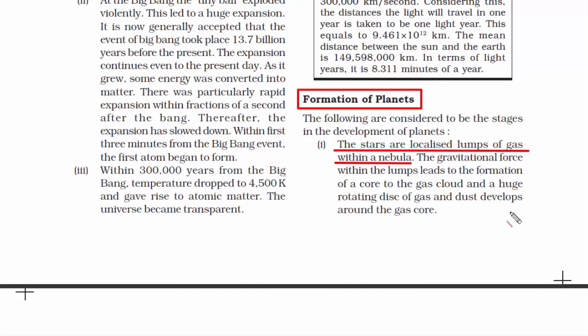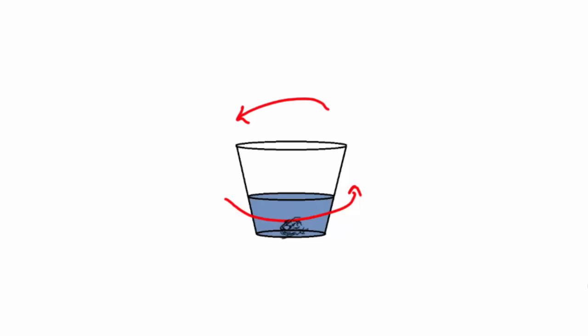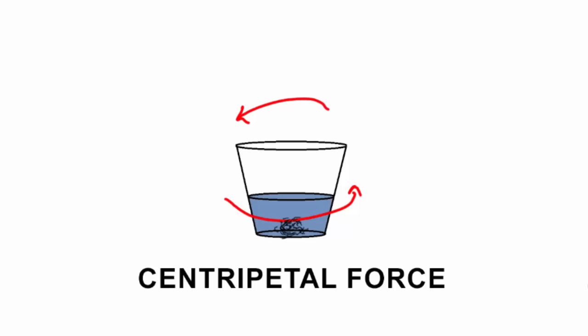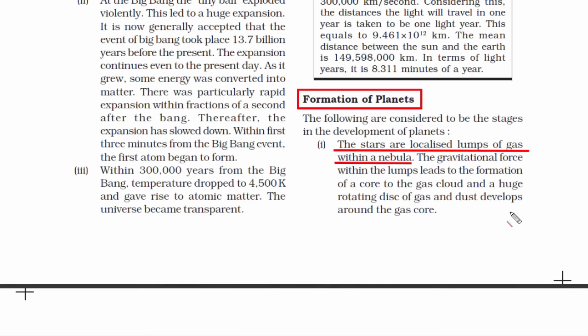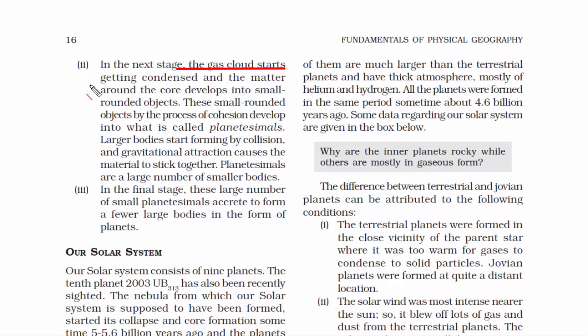A huge rotating disk of gas and dust envelopes around the gas core. A good example to illustrate this is: take a bucket of water, put some sand in it, and spin the water in a circular fashion. You will notice that all the mud particles you had poured will come to the center and gather — that's how it forms a core. The same thing happens in these gas clouds inside a star. After a long time, layers upon layers start forming, and that's how a rotating disk of gas is formed.